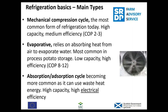Main types. There are lots of types of refrigeration plant. The one that we all know is the mechanical compression cycle — that's in pretty much 90–95% of refrigeration equipment. It's high capacity and medium efficiency. When I say efficiency here, I'm really talking about electrical efficiency. Then evaporative cooling: that just relies on absorbing heat from the air to evaporate water. This is found in agriculture quite a lot for processed potato storage — also called adiabatic cooling. It's quite low capacity; you can't go down to low temperatures. But it's very high electrical efficiency — it's just the efficiency of the fan.